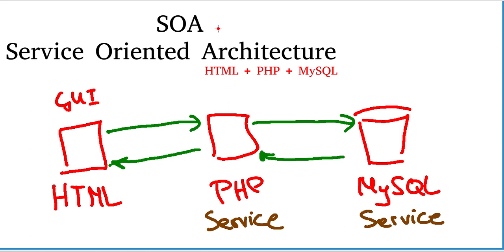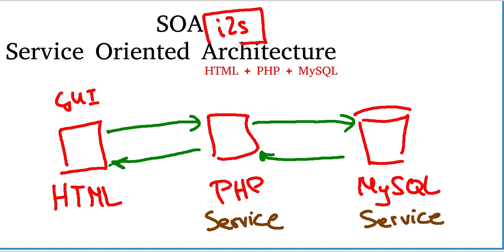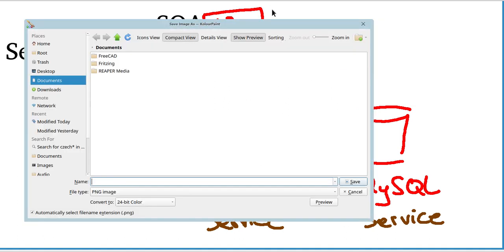So in SOA — in service-oriented architecture — you have it modularized, and then everything runs as a service, like usually a server. You could even understand a dynamic link library, a DLL, as kind of a service.